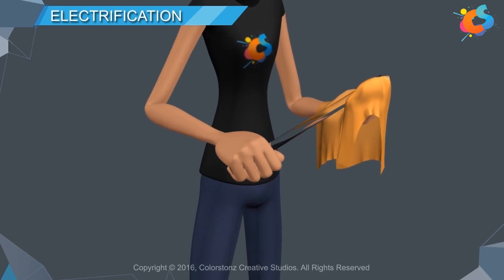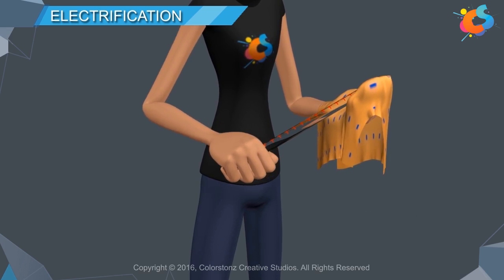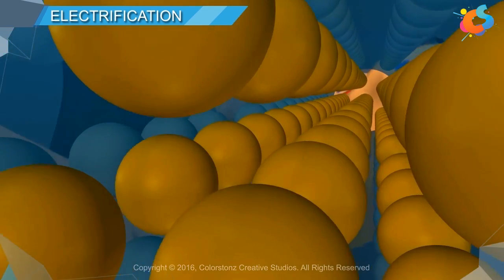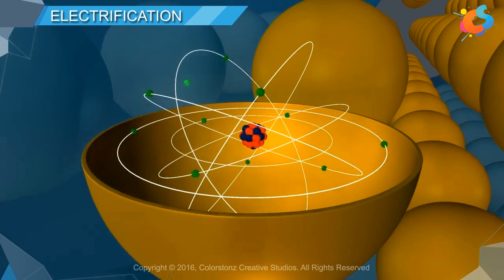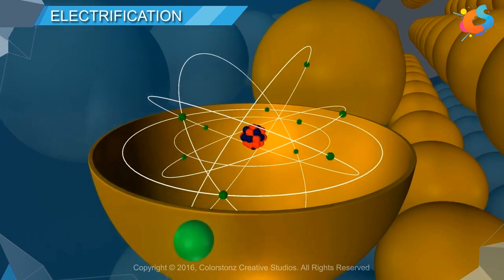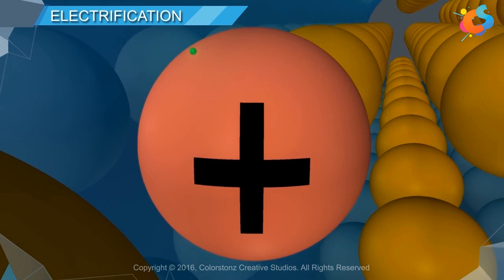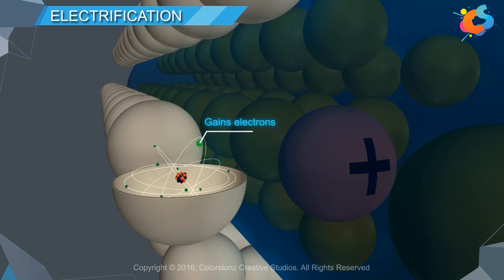When a glass rod is rubbed against a silk cloth, the glass rod acquires positive charge while the silk cloth acquires a negative charge. This happens because when a neutral glass rod is rubbed with a neutral silk cloth, the energy spent in rubbing is utilized to remove the outermost electrons from the atoms. The glass rod loses electrons while rubbing, and due to the deficiency of electrons, the atoms of the glass rod develop positive charge.